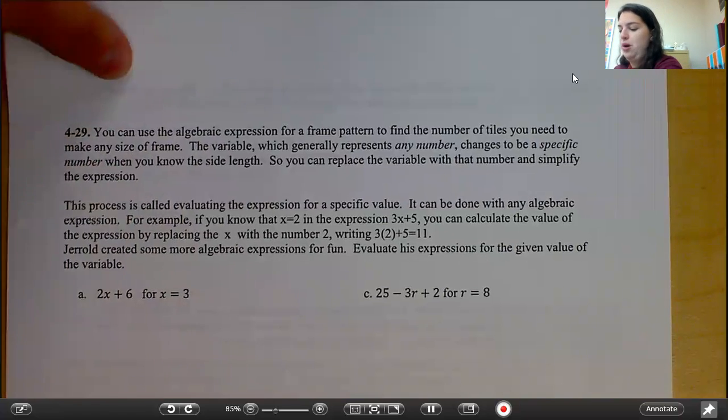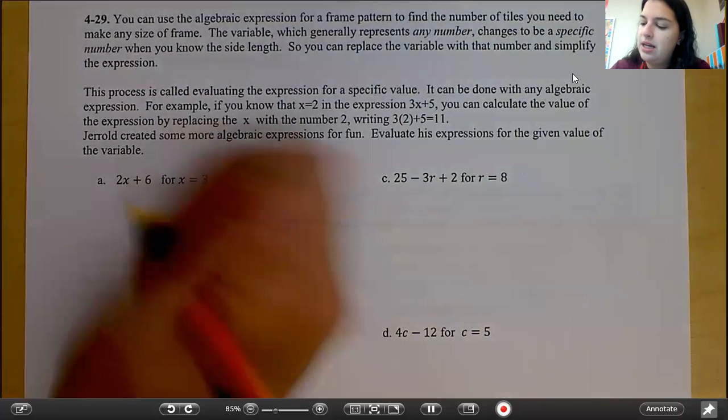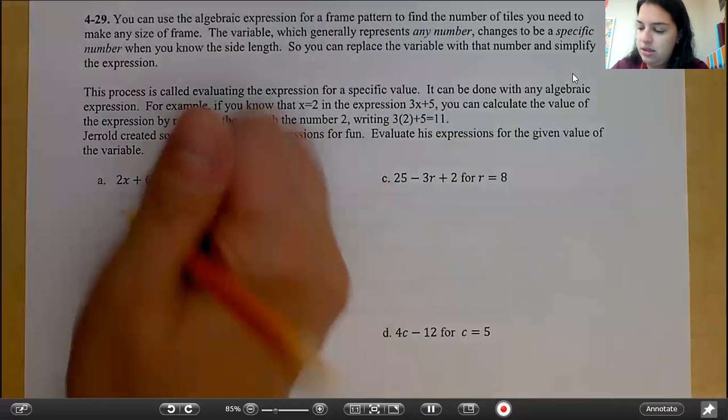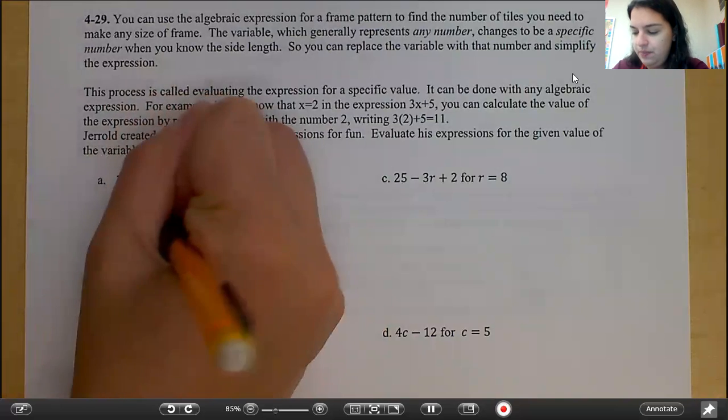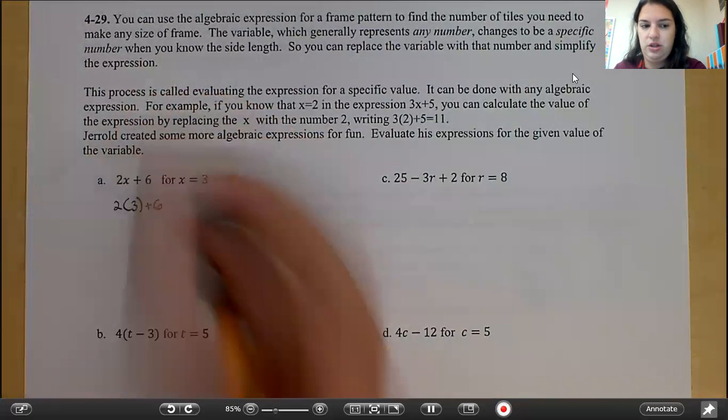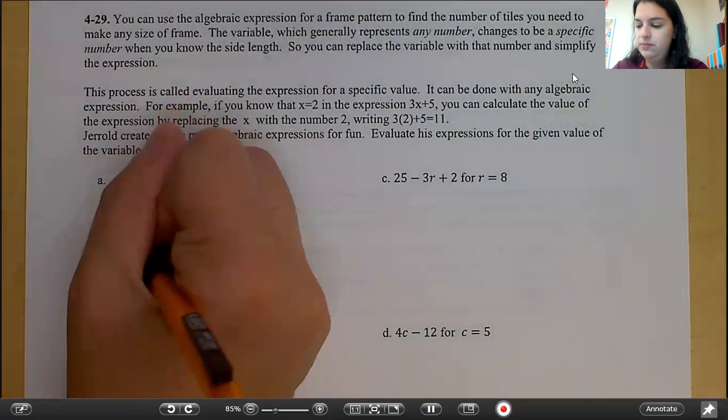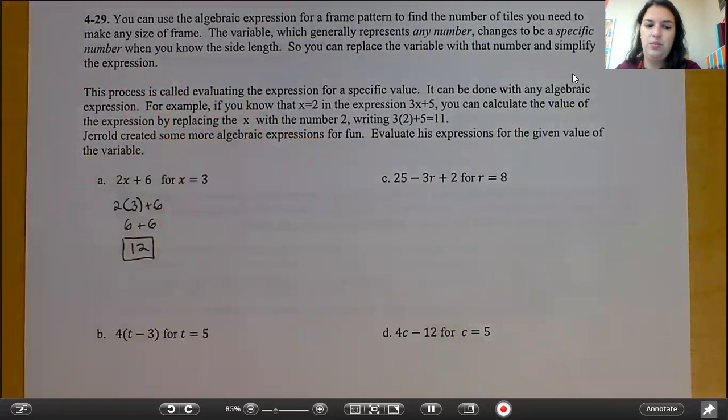So we're going to do part A together. So we have 2x plus 6 for x equals 3. So when you see an x, you're going to substitute in 3 for x. So we have 2 times 3 plus 6. Then you ask yourself order of operations. So multiplication. 2 times 3 is 6. 6 plus 6 is 12. So Gerald's answer for that expression would be 12.